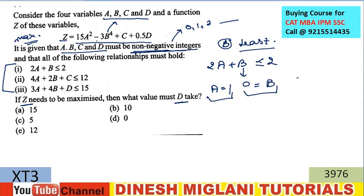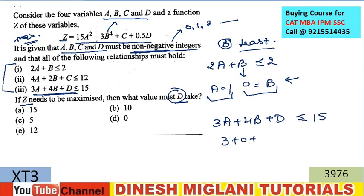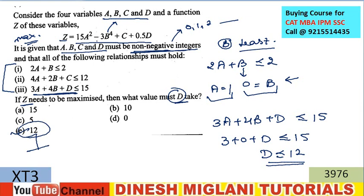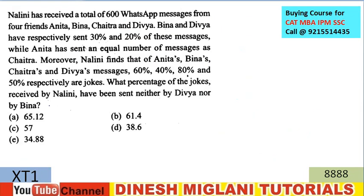Now I have to find the value of D using the third constraint: 3a + 4b + d ≤ 15. Substituting a = 1 and b = 0: 3 + 0 + d ≤ 15, so d ≤ 12. My question is what value must d take to maximize Z — d must take the value 12. The answer is E. The maximum value of d possible is 12.